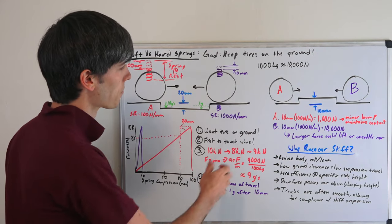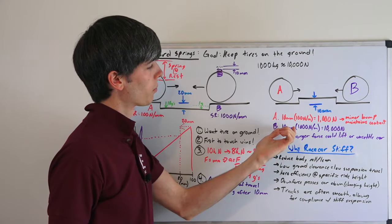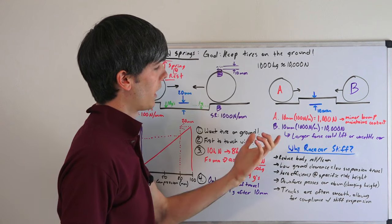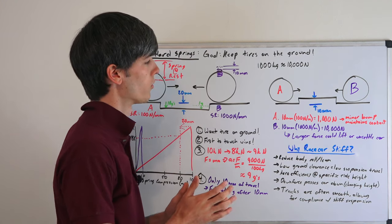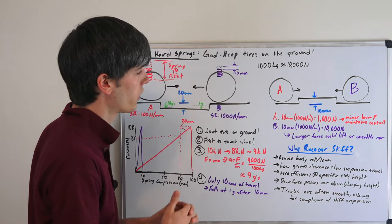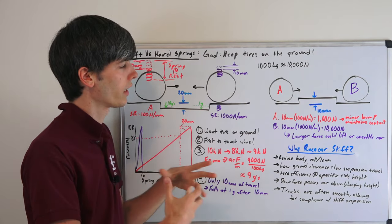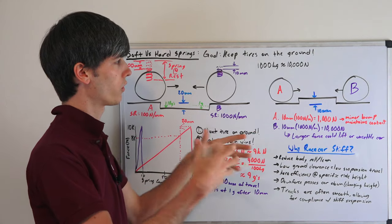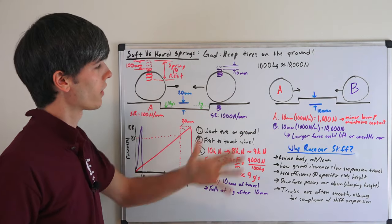Now for B to compress that spring 10 millimeters, it requires a 10,000 newton force because of the higher spring rate. So the larger force could lift the car physically into the air or it could just unsettle it. You could have some load transfer occur and so it might slide out. And so obviously that's not ideal.